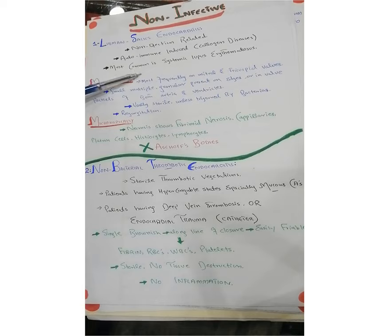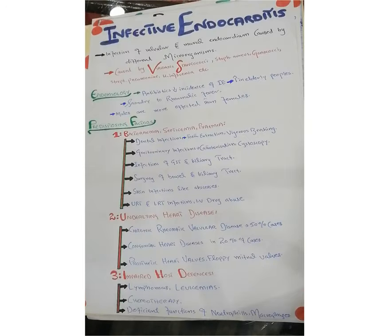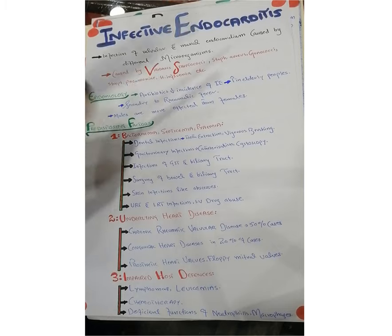To summarize non-infective endocarditis: it includes two conditions — number one, Libman-Sacks endocarditis, which is autoimmune-induced; and number two, non-bacterial thrombotic endocarditis, which is due to disturbance in the endocardial lining. Now moving on to infective endocarditis, which involves bacteria. The inner structure of the heart consists of valves, walls, and lining of the atrium and ventricles. Infective endocarditis is the infection of both valvular and mural endocardium.